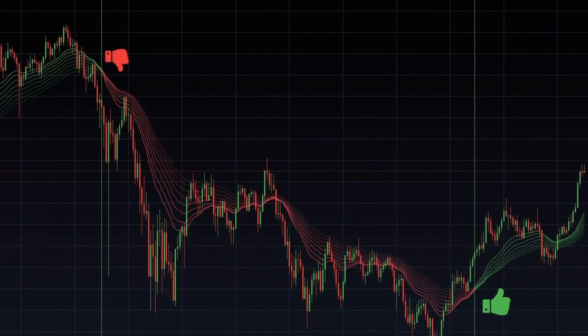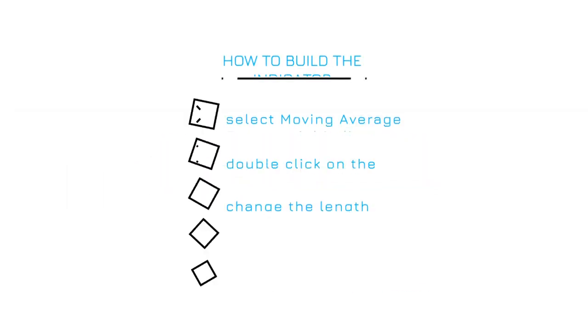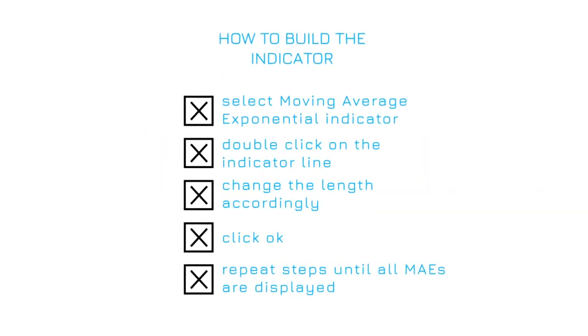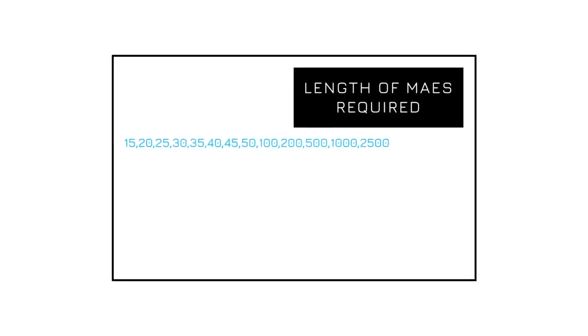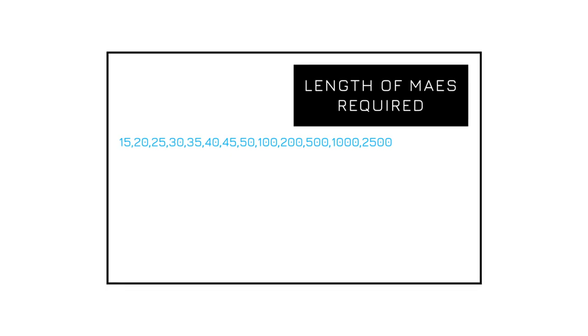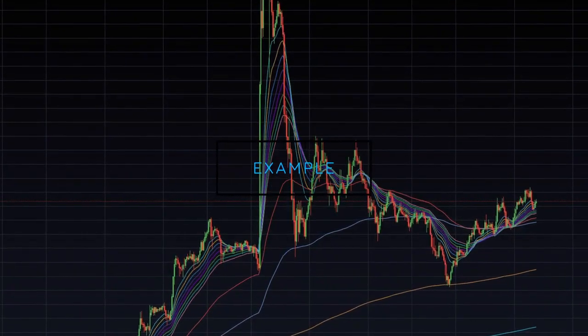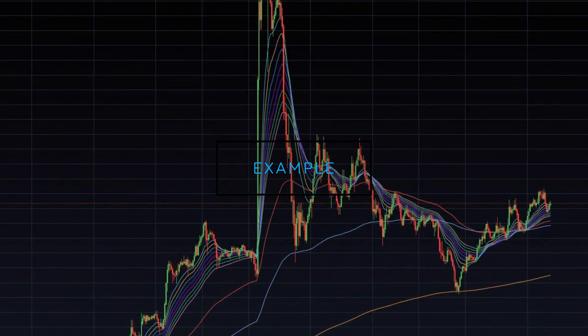Now let's have a look at how to build the EMA Ribbon indicator on AAX. The first thing you're going to want to do is follow the instructions currently being shown on your screen. To build the EMA Ribbon, you need to change the length of each of your EMAs to the following lengths as shown on the screen. Once you've input the data lengths shown and followed the previous instructions, your indicator should now be completed and look something similar to what is currently being shown on your screen.